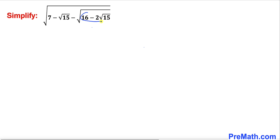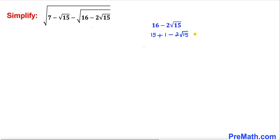Let's focus on the inner radicand. Here I have copied it down and let's go ahead and manipulate this one. We can write 16 as 15 plus 1. Now let me go ahead and tweak this 15 — 15 could be written as the square root of 15, whole squared. It doesn't make any difference whatsoever.